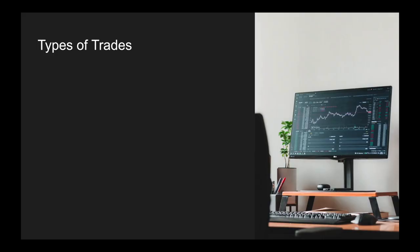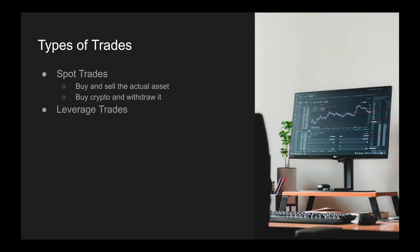On Bybit, there are two main types of trades. The first is the spot trade — this is when you buy and sell the actual asset. You can buy the crypto and withdraw it. But what we're going to be doing are the leverage trades — these are derivatives such as futures, and they allow you to gain more exposure to price movements. They are a little bit more complicated to execute, but that's why we're going to have these videos.